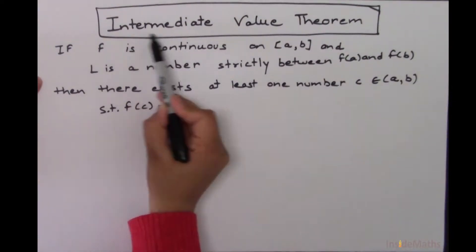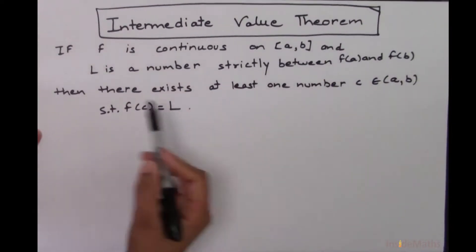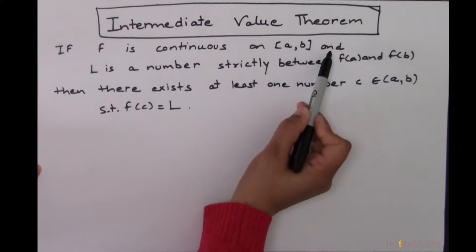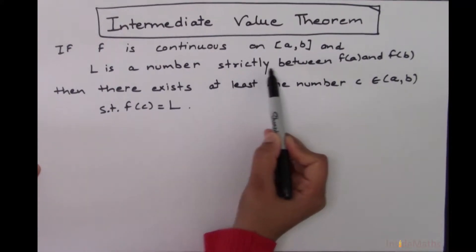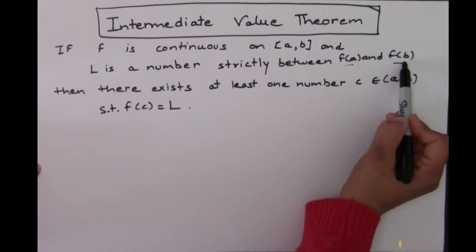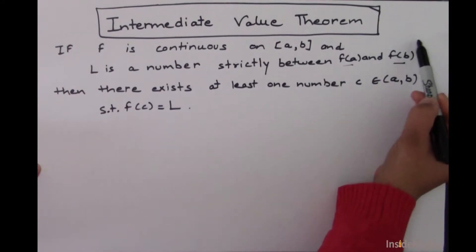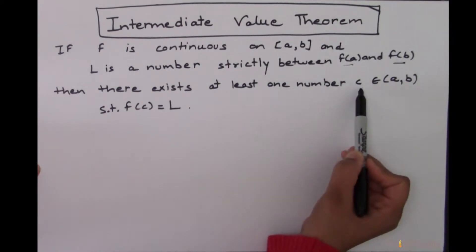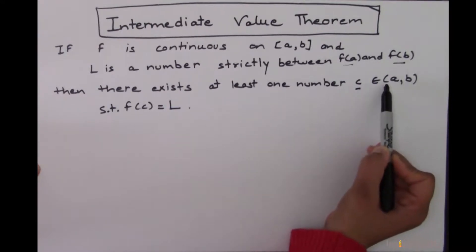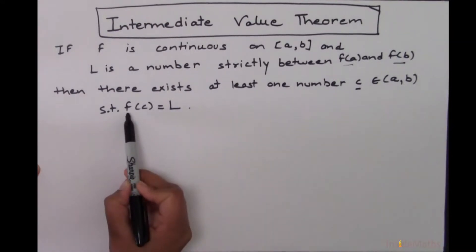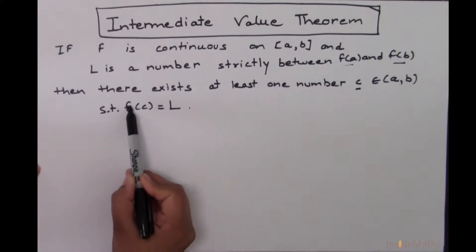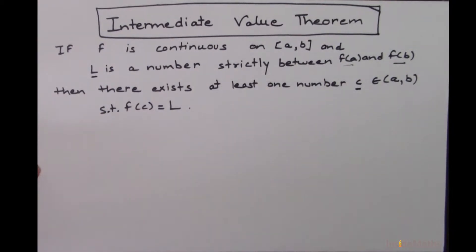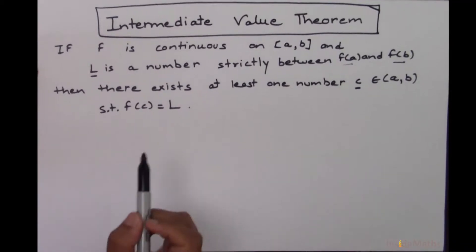In this video I will explain the meaning of the Intermediate Value Theorem, which says: if f is continuous on the closed interval a to b, and L is a number which is strictly between f of a and f of b — if these two conditions are true, then there must exist at least one number c in the open interval a to b such that f of c equals L.